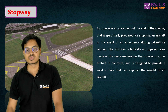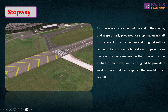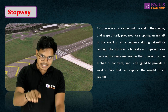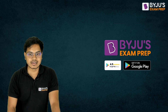The next component is the stopway. A stopway is very essential — it is located at the end of the runway. Specifically, it is an area beyond the end of the runway that is prepared for stopping an aircraft in the event of an emergency during take-off or landing. The stopway is typically an unpaved area made of the same material as the runway — asphalt or concrete — and is designed to provide a level surface that can support the weight of an aircraft in case of any emergency.